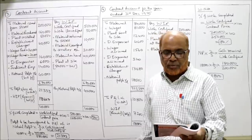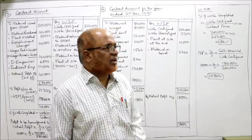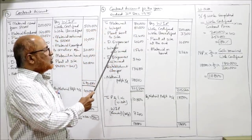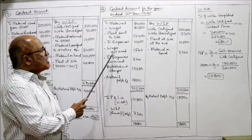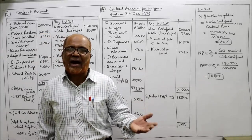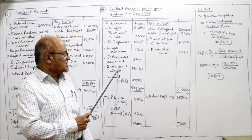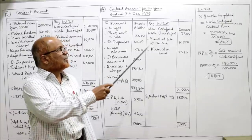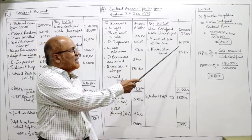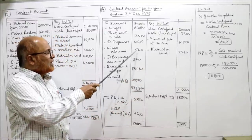The agreed contract price is 2,50,000. Cash received = 1,80,000. Wages accrued are added to wages on the debit side. Direct expenses accrued are added to direct expenses. Establishment charges on the debit side. The problem specifically states: prepare the contract account, crediting P&L with two-thirds of the profit reduced to the proportion of cash received to work certified.